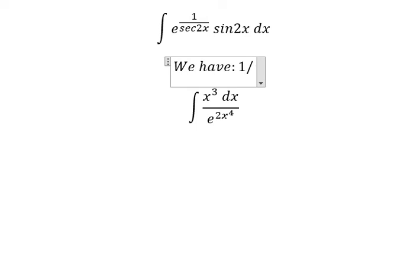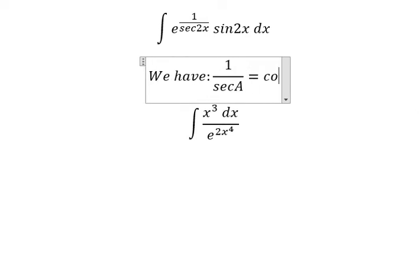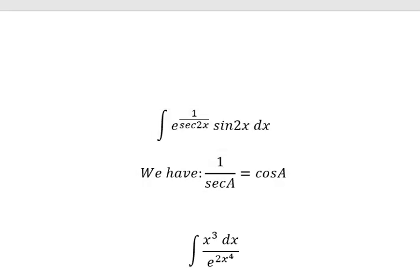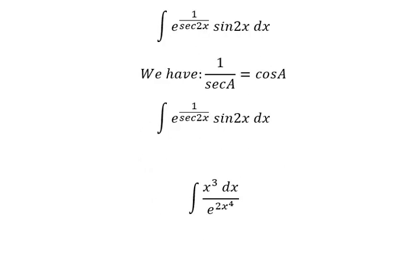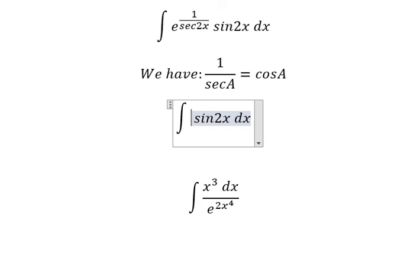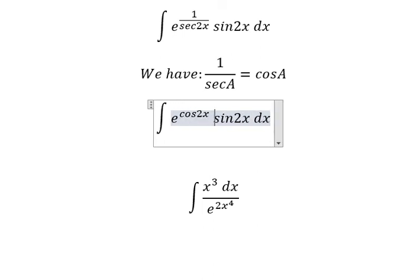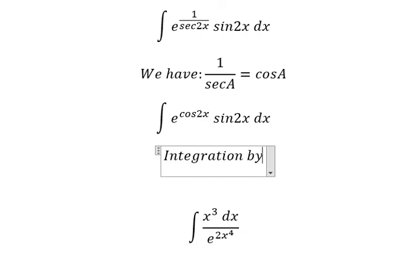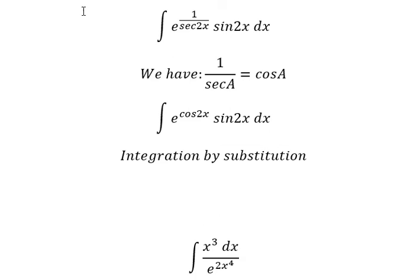1 over secant of x equals cosine x. So if we look carefully, 1 over secant of 2x is cosine 2x. Next, we need to use integration by substitution, so I will put u equal to cosine 2x.